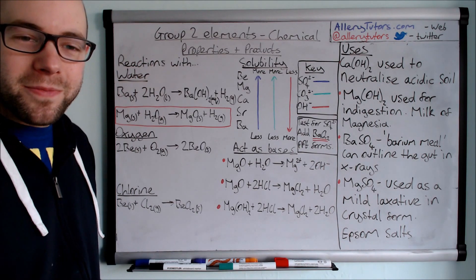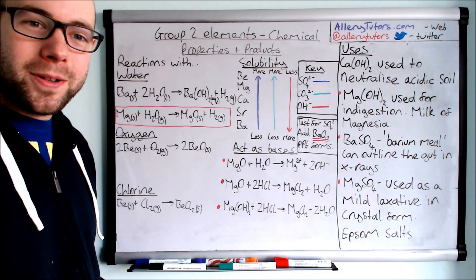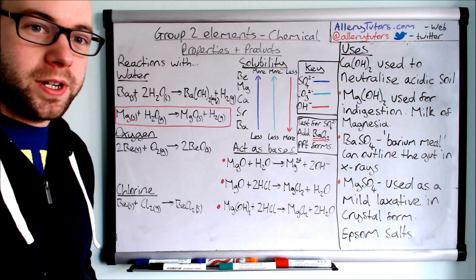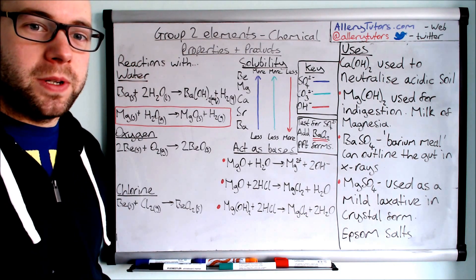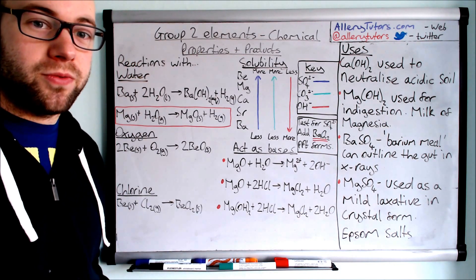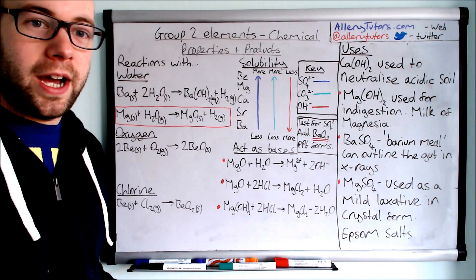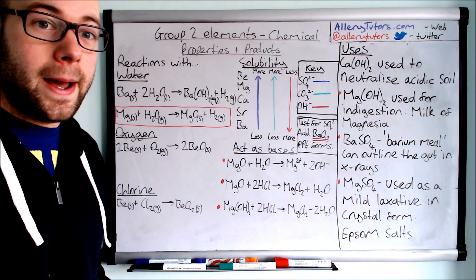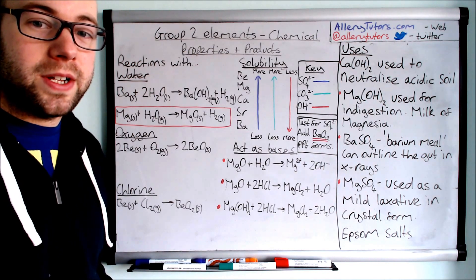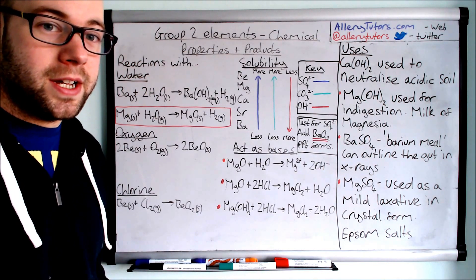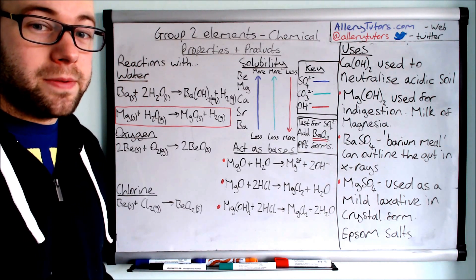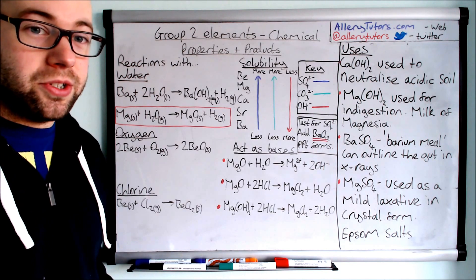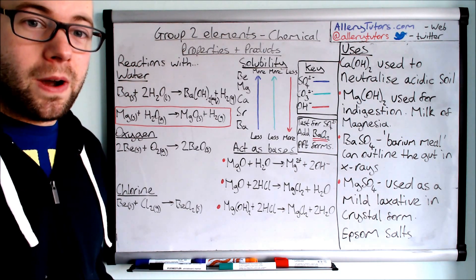Hi there, my name is Chris Harris and I'm from aloetutons.com. Welcome to this video on group 2 elements, chemical properties and products. In this video we're going to be looking at how group 2 metals react with water, oxygen and chlorine. We're also going to look at the solubility of group 2 compounds — for example sulfates, carbonates and hydroxides — how these compounds act as bases, and the uses of some of these group 2 compounds.